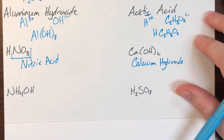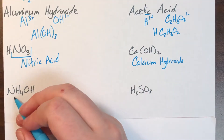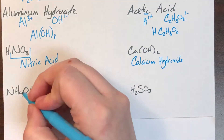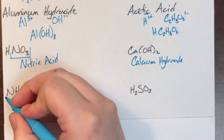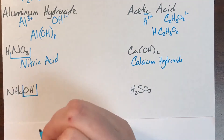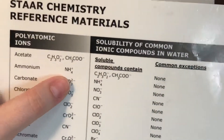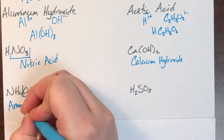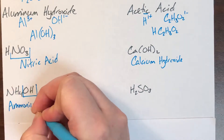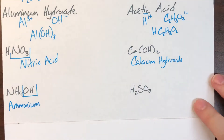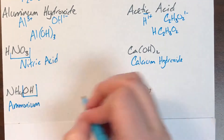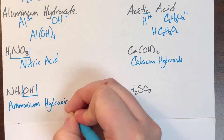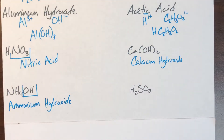Next I have NH₄OH. Not leading with a hydrogen, so this is not an acid — I follow normal nomenclature rules. OH is one polyatomic ion, and NH₄ is another. NH₄ is ammonium. Since ammonium is already a polyatomic ion, I don't need to rename it even in its cation form. OH is hydroxide. So the name is ammonium hydroxide.